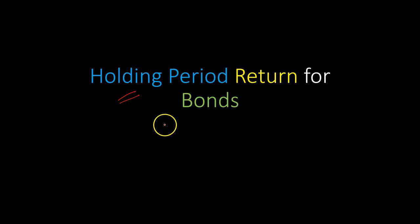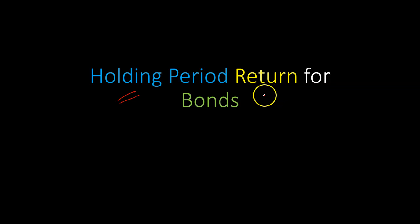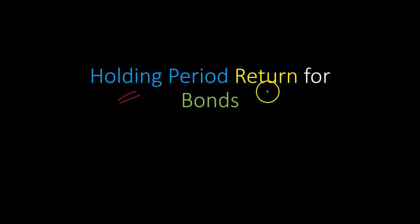One point I want to emphasize is that the holding period return on a bond may not — and in fact often is not — equal to the yield to maturity. The yield to maturity is the rate of return you would make if you bought the bond and held it until it matures. If you decide to sell it before maturity, your holding period return may be higher or lower than the yield to maturity.